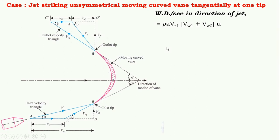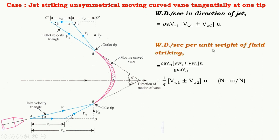To find the work done per second in the direction of the jet, we substitute Fx into u. So work done per second equals rho A Vr1 into bracket Vw1 plus or minus Vw2, multiplied by u. Depending upon the angle beta, you have to put the appropriate sign. To calculate the work done per second per unit weight of the fluid striking, we get: Vw1 into bracket Vw1 plus or minus Vw2 into u, divided by g. Simplifying, this gives 1/g into bracket Vw1 plus or minus Vw2 into u.